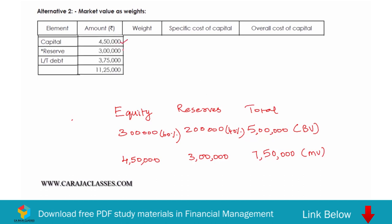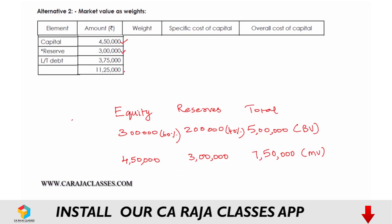So the market values are: equity capital at 4 lakh 50 thousand, reserves at 3 lakhs, and long-term debt at 3 lakh 75 thousand (as given in the question, different from the book value). Total market value is 11 lakh 25 thousand. Weights: 4.5L / 11.25L = 40% (0.40), 3L / 11.25L = 27% (0.27), 3.75L / 11.25L = 33% (0.33). All weights sum to one.